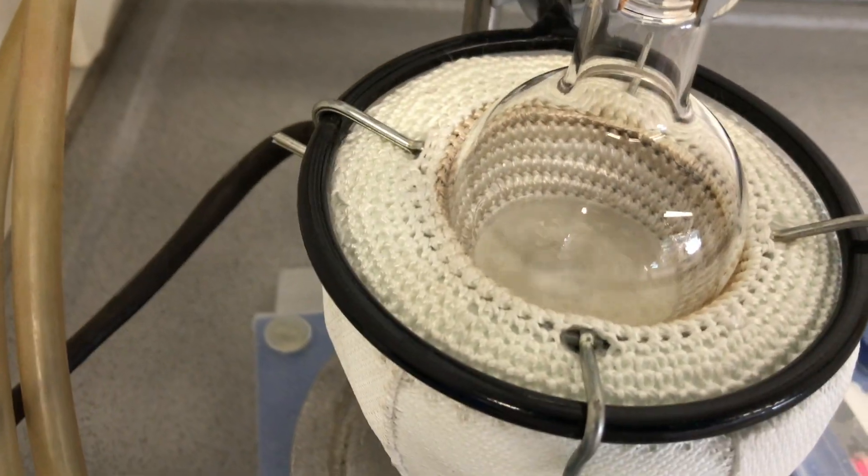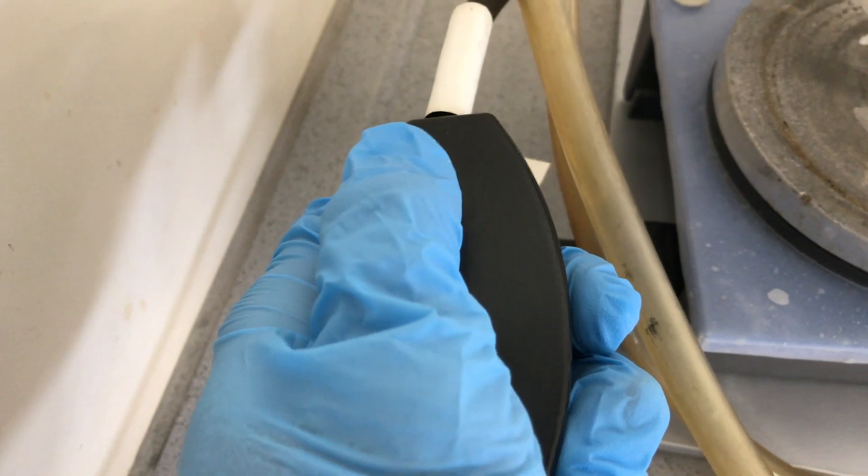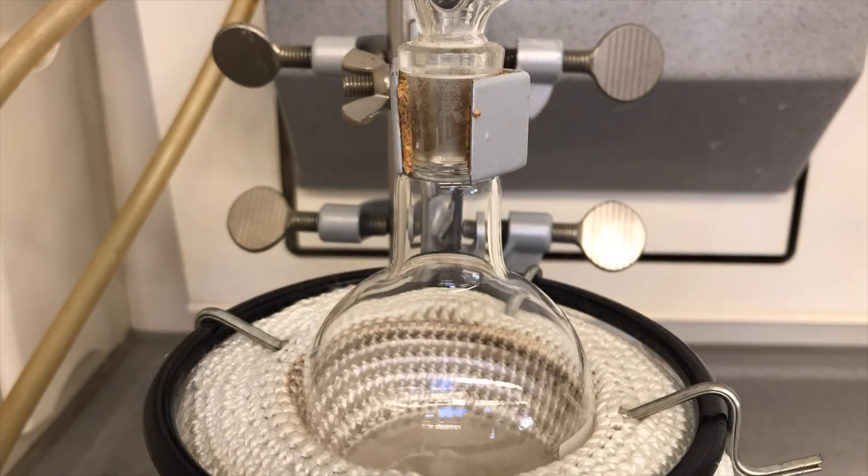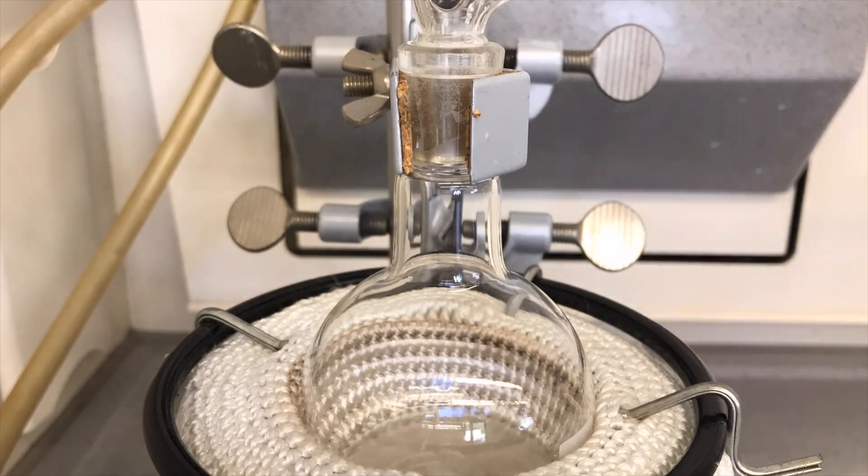The dehydration reaction of chloral hydrate using sulfuric acid should already proceed at room temperature. But we want a pure product. So how do we get one? We need to distill off the chloral. Chloral has a boiling point of about 97 degrees Celsius, which is lower than water.